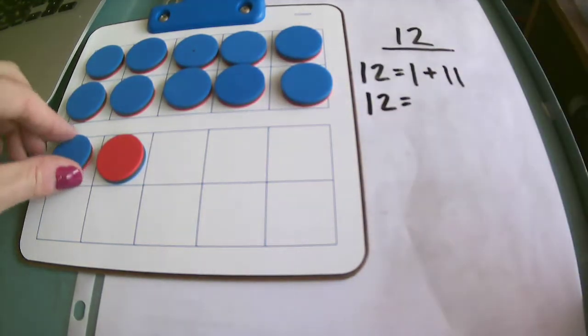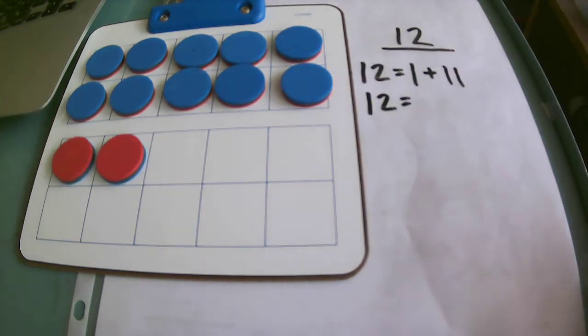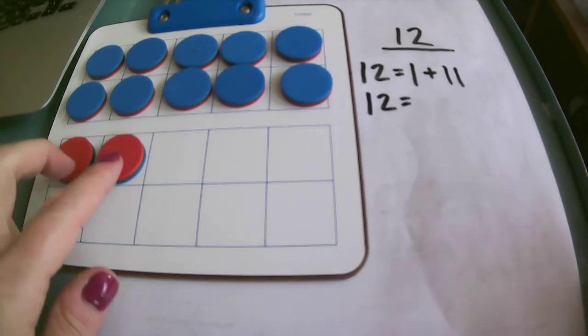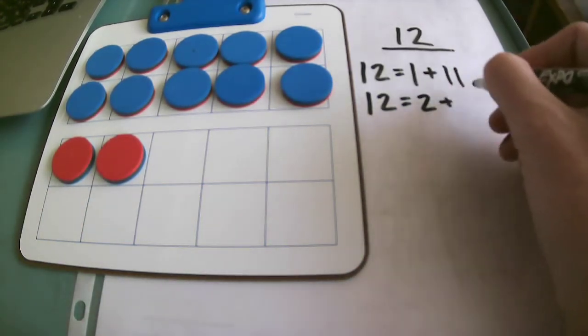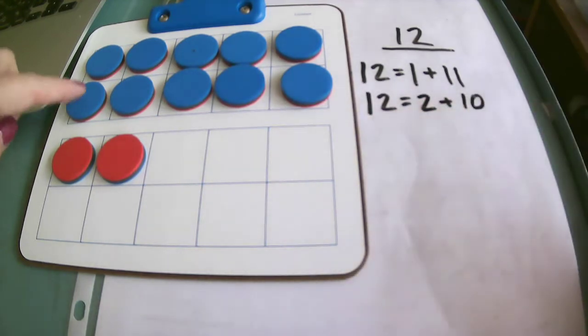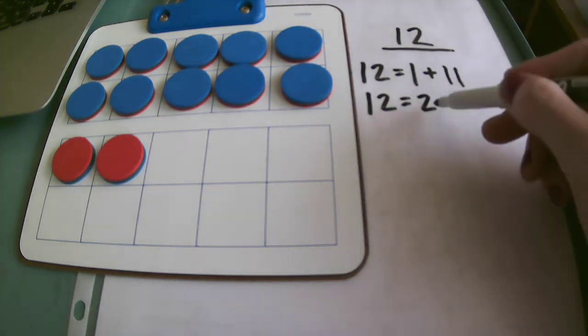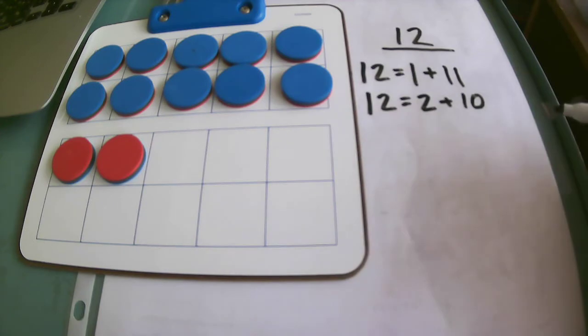I'm going to flip over another one and now I have 2 red and 10 blues, because 2 and 10 together give me 12.